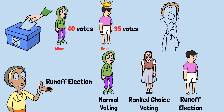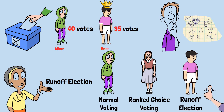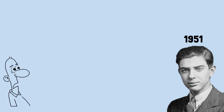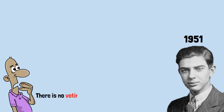All three systems seem reasonable, but they give completely different results. This isn't a quirk. This isn't bad luck. This is a fundamental mathematical reality. In 1951, a young economist named Kenneth Arrow proved something that shattered the foundations of democratic theory.